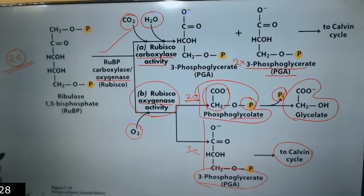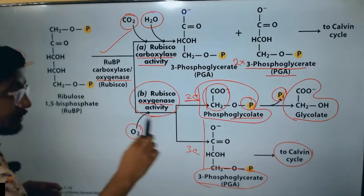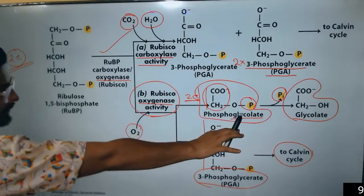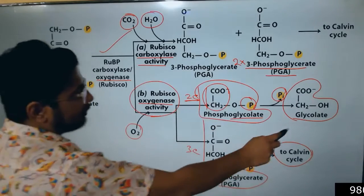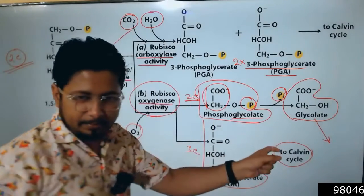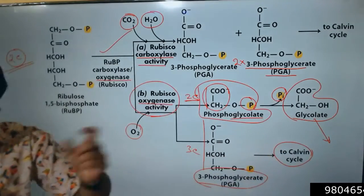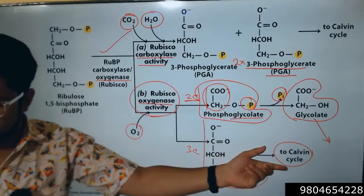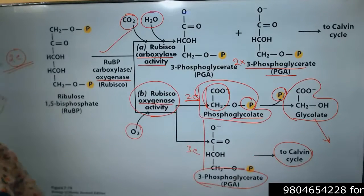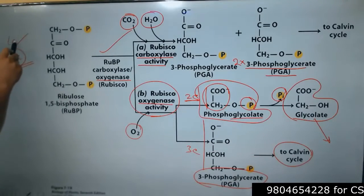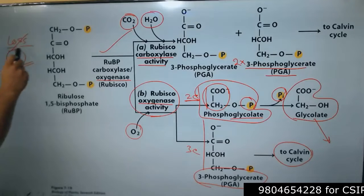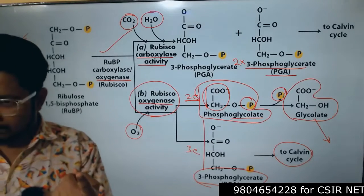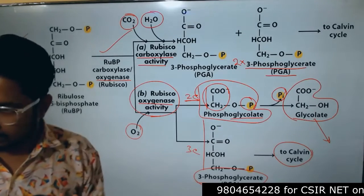The one 3-phosphoglycerate produced can enter the Calvin cycle with no issue, but the two carbons in glycolate are wasted. Extra energy is also wasted. To convert glycolate into a metabolite usable in photosynthesis requires further steps and energy. There is a straightforward loss of two carbons, and since six carbons are needed to produce one sugar, one third of the carbon is lost.